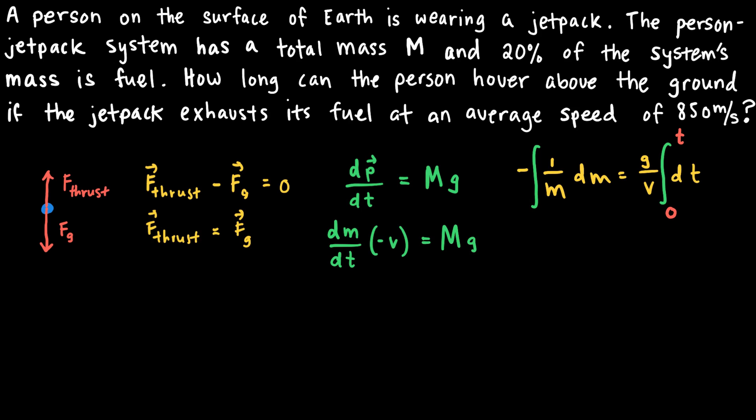The system should be able to hover for as long as it has fuel. So the initial mass is simply capital M. The final mass is the mass remaining after the 20% fuel is burned — that is, 80% of the original mass, written as 0.8M. So 0.8M is the upper limit of the left-hand side integral.